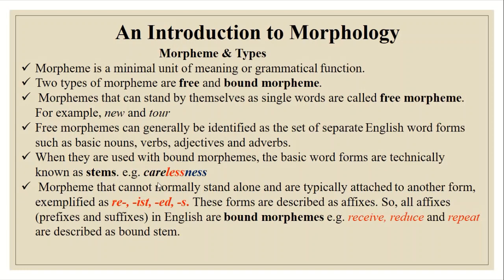For example, in the word 'carelessness', 'care' is the free morpheme, while '-less' and '-ness' are both affixes attached to it. So 'care' is the stem word. Morphemes that cannot normally stand alone and are typically attached to another form — for example, 're-', '-ed', and '-s' — are described as affixes.